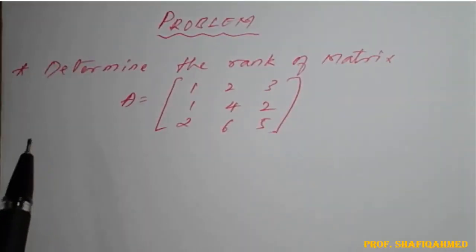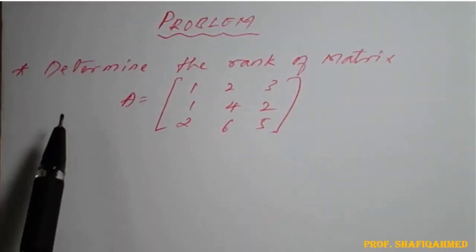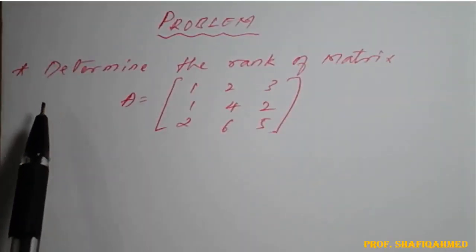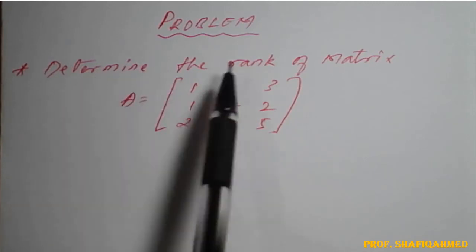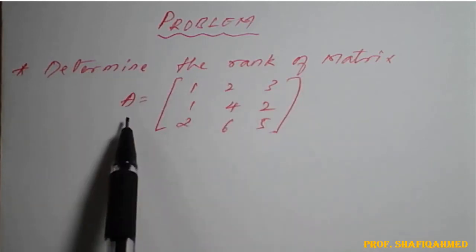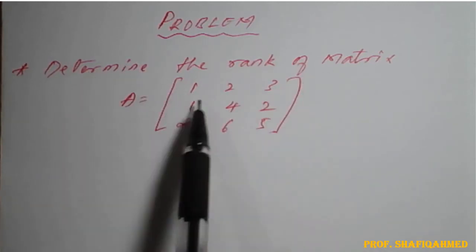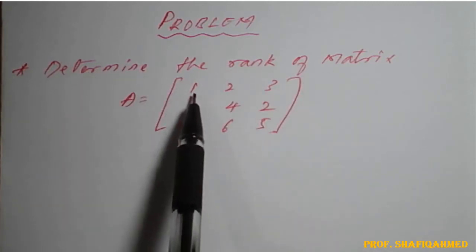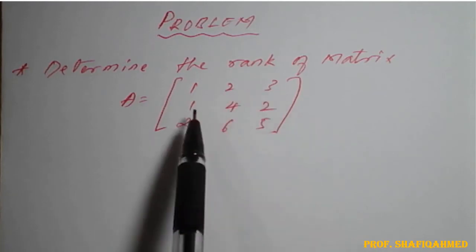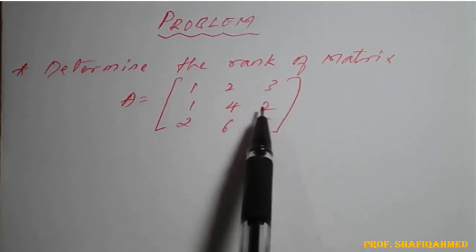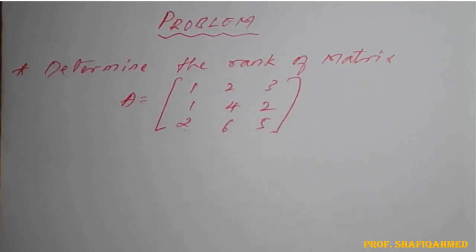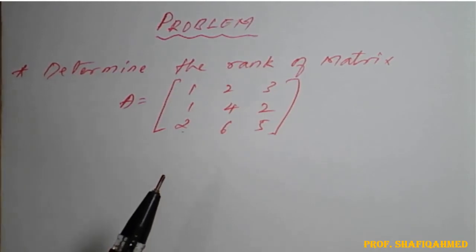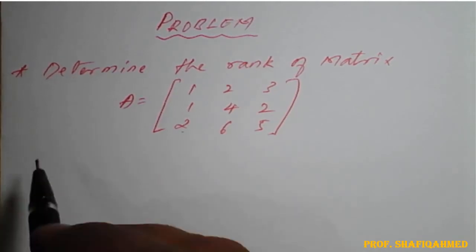We will see one example: determine the rank of matrix A equal to 1, 2, 3, 1, 4, 2, 2, 6, 5. We will see how to find the rank of the matrix here.